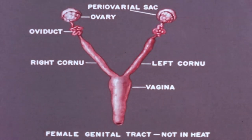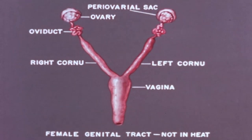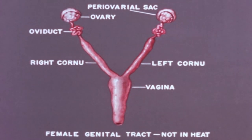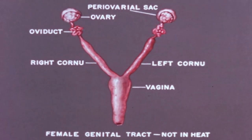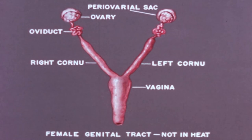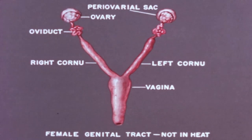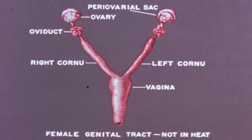Before examining the more obvious changes in the reproductive organs of the rat, especially during the period of heat, it is desirable to understand the normal anatomy of the genital tract. The ovaries are enclosed in a thin transparent membrane, the periovarial sac. The highly coiled oviducts connect the periovarial spaces with the uterine cornua. The right and left cornua enter separately into the cranial vagina.